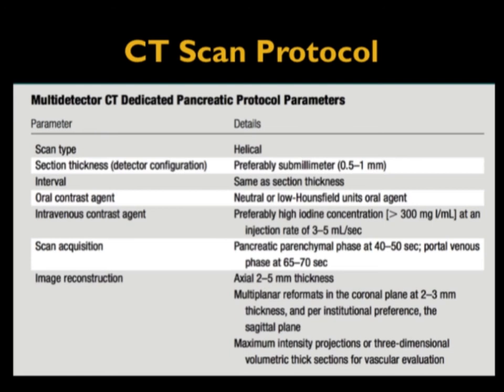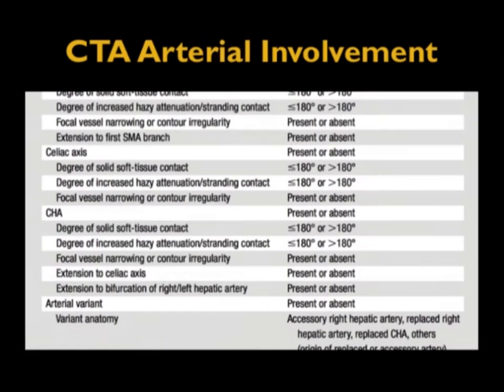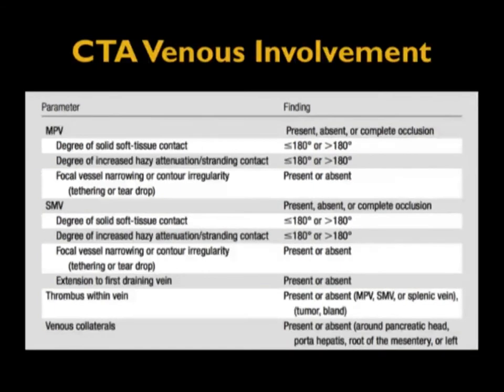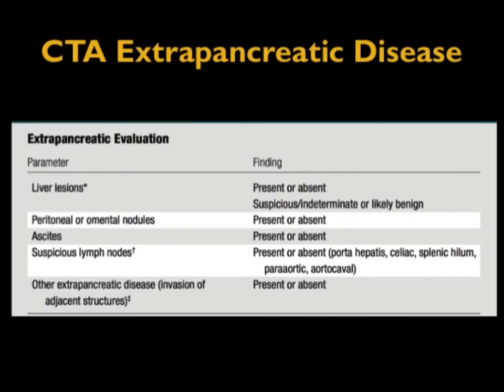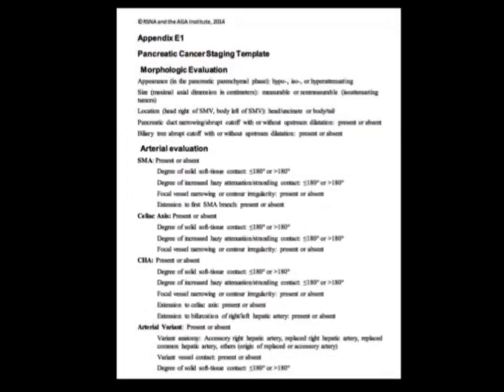For example, in this case we talk about the scanner and slice thickness, the contrast material, image reconstruction. We talk about the various parameters for measuring the SMA, common hepatic, or celiac, and venous phase imaging from the SMV to the portal vein. We look very carefully at how we measure things, then look at extrapancreatic disease. The goal is to have everyone reporting things the same way, which will go a long way if you're trying to have multicenter trials.